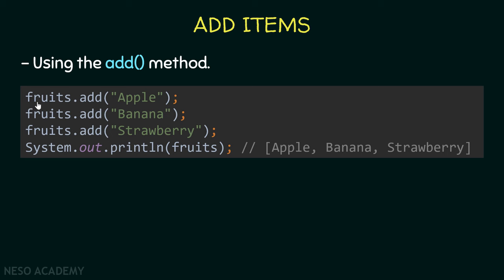We created an ArrayList of strings called 'fruits', so let's add elements to it. We use the name 'fruits' and call the add() method. Since this is an ArrayList of strings, we pass a string argument. Here we're adding 'apple', then 'banana', then 'strawberry'. When we print the ArrayList, a string representation is automatically printed showing all three values.